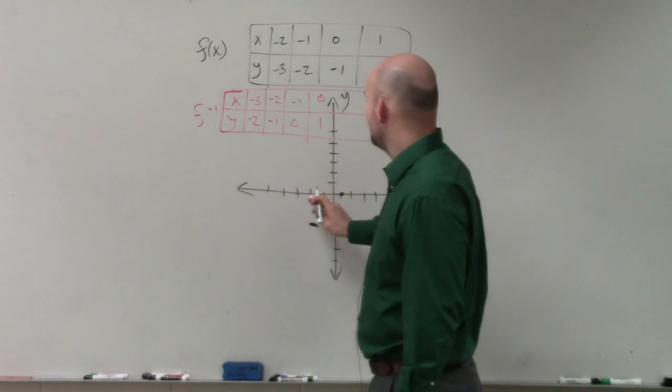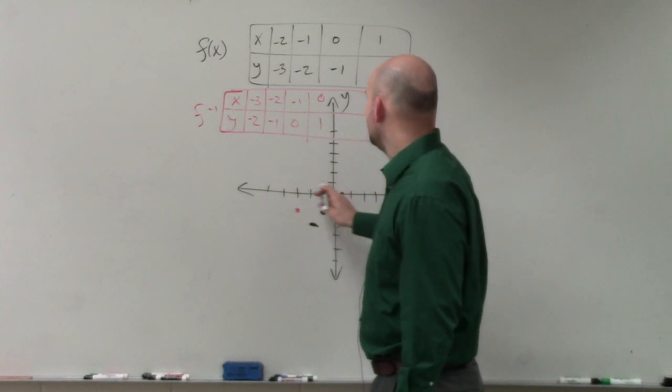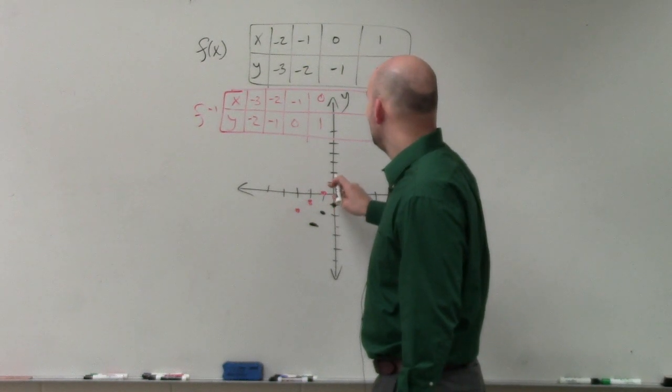So that's negative 3. So now it's negative 3, down 2. Negative 2, down 1. Negative 1, 0. And 0, 1.